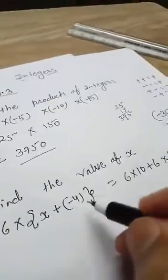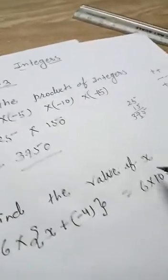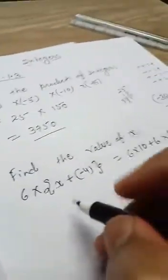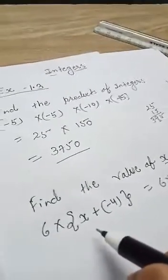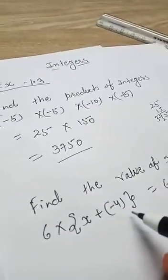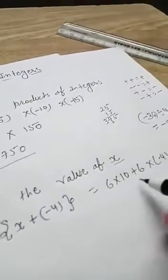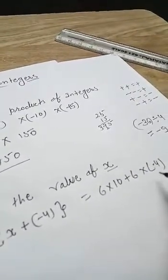Okay, and your next question: find the value of x. So given question is 6 multiply x plus minus 4 is equal to 6 multiply 10 plus 6 multiply minus 4.